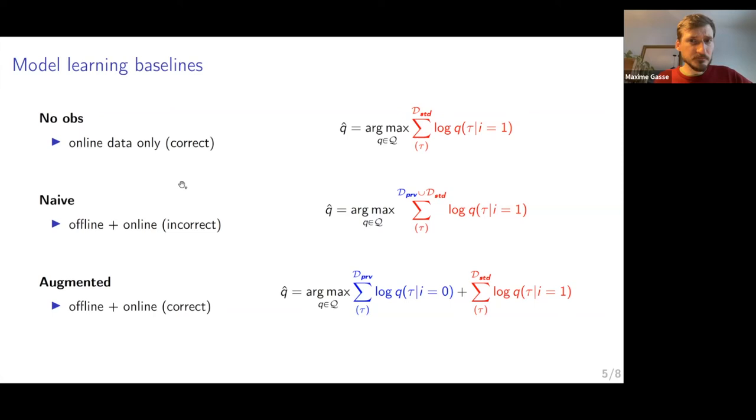So we will compare this method against two baselines. The first one is what if we don't use the offline data? We just use online data. This is causally correct. So you just fit using this equation. Then we compare against a naive method that would use the privileged data but in a naive way. It's not going to consider that there might be confounding. It's just going to use all of the data. It's going to put the two datasets together and just fit a transition model, a regular transition model.